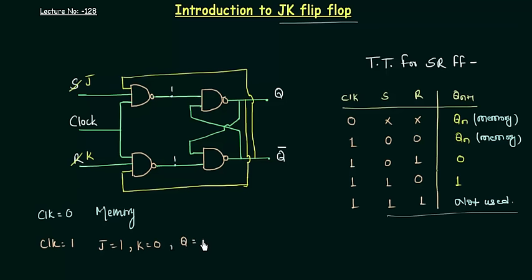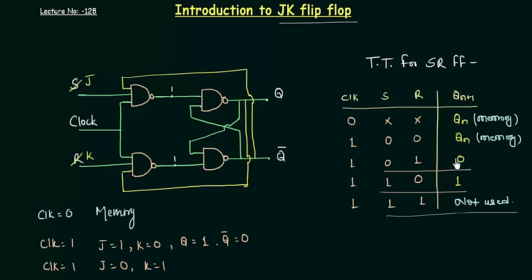When clock is high, J is 1, and K is 0, our Q is 1 and Q complement is 0, as you can see from the table. The third case is when clock is 1, J is 0, and K is 1. From the SR truth table the output Q is 0 and Q complement is 1. So for the first four cases everything is the same in the JK flip flop and SR flip flop. But the last case is different and very important.